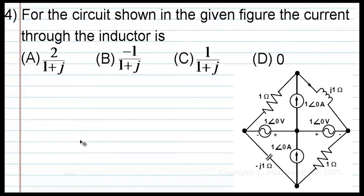For the circuit shown in the given figure, the current through the inductor is, the options given are: 2 by 1 plus j, minus 1 by 1 plus j, 1 by 1 plus j, and 0.